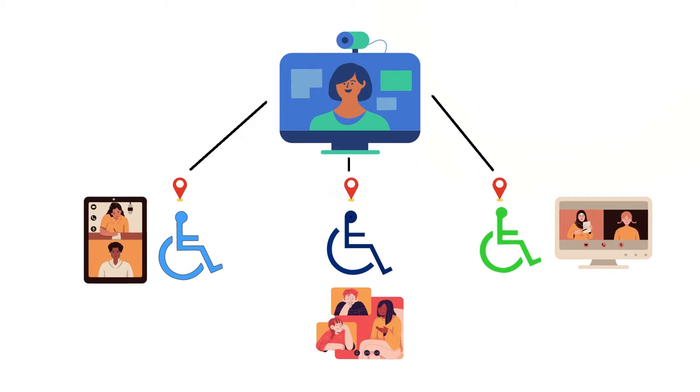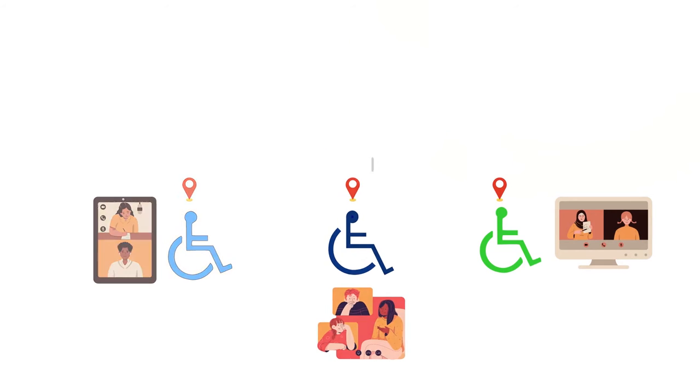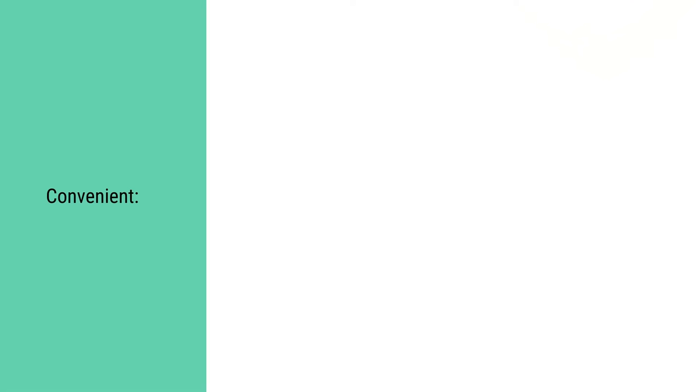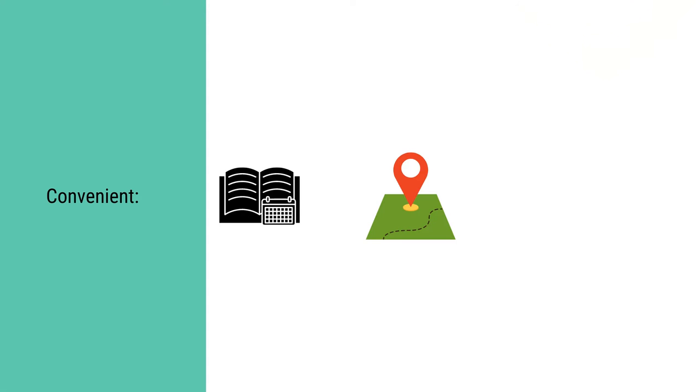This is also an attractive alternative for people with disabilities because they are not required to leave the physical environment where they are living to study at distant places. It also provides them autonomy because they can study in their familiar and favorite environments. Now let us see what are the different reasons why people with disabilities prefer the open and distance learning system. First of all, it is convenient. People with disabilities can study at their own pace, place and time.